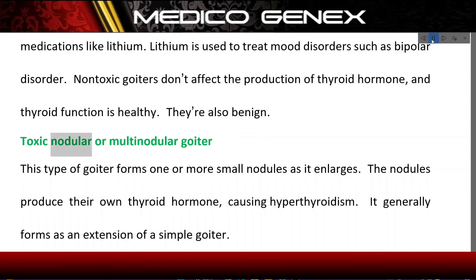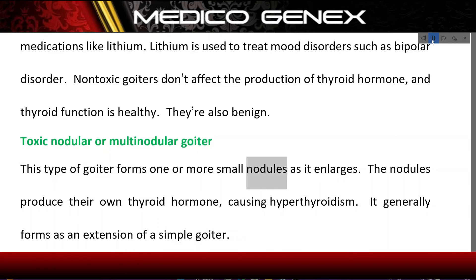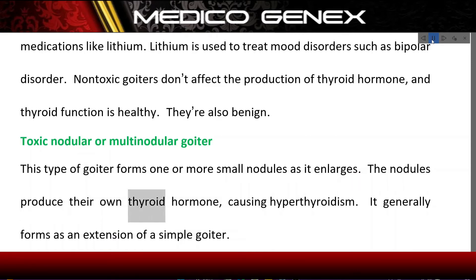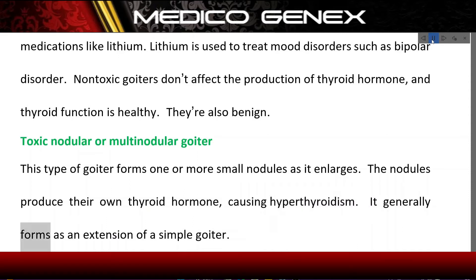Toxic nodular or multinodular goiter: This type of goiter forms one or more small nodules as it enlarges. The nodules produce their own thyroid hormone, causing hyperthyroidism. It generally forms as an extension of a simple goiter.